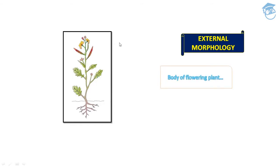Now comes external morphology. This is the body of a flowering plant. The wide range in the structure of higher plants never fails to fascinate us. Even though angiosperms show a large diversity in external structure — which we commonly call morphology — they are all characterized by the presence of roots, stem, leaves, flowers, and fruits.